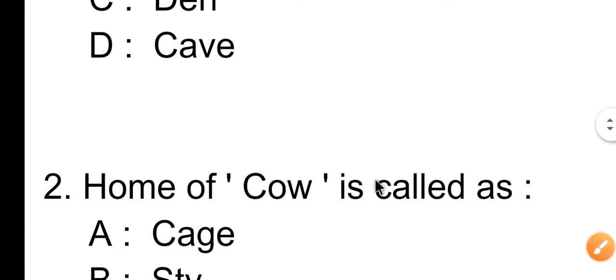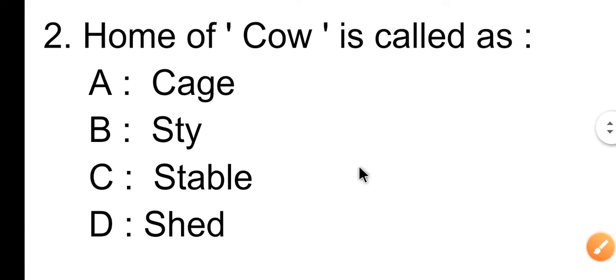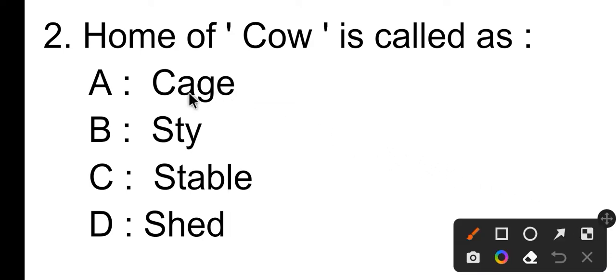Question number two: the home of cow is called as — Option A, Option B, Option C is stable. The answer is Option C, which is stable.